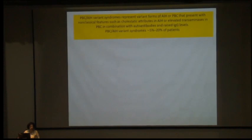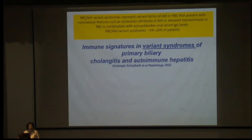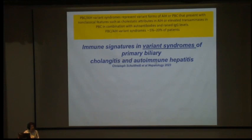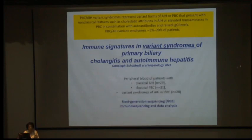Now to the main topic: variant syndromes of PBC and AIH. Only 5 to 20 percent of patients have variant syndromes — symptoms belonging either to PBC, AIH, or both. A 2023 Hepatology paper examined immune segregation signatures in variant syndromes. This well-established group had previously done T cell receptor beta chain and IGH immune sequencing in AIH alone and found a few signatures very prevalent for AIH.